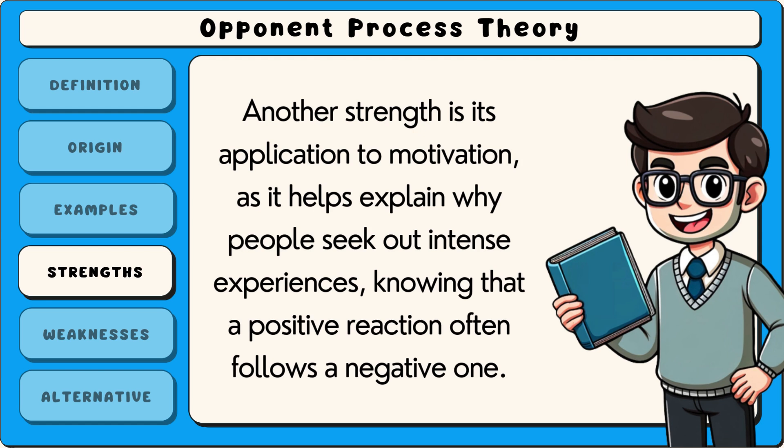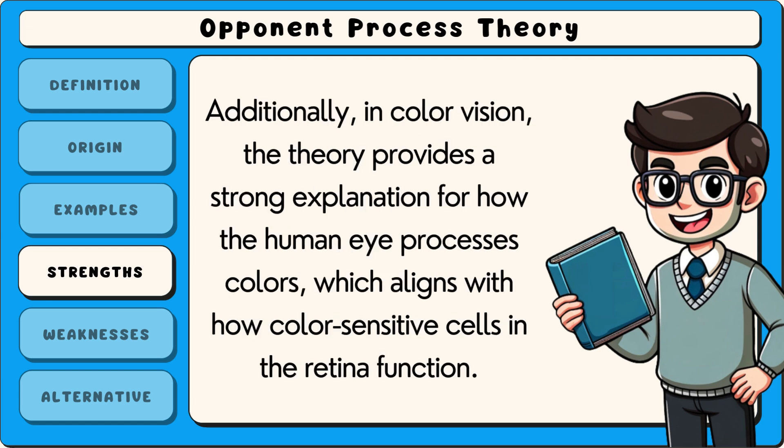Knowing that a positive reaction often follows a negative one. Additionally, in colour vision, the theory provides a strong explanation for how the human eye processes colours, which aligns with how colour-sensitive cells in the retina function.